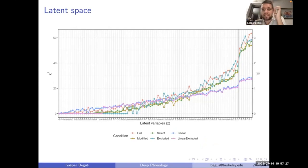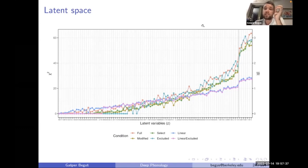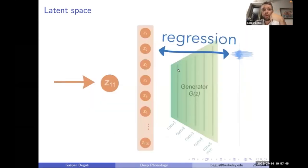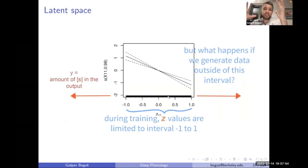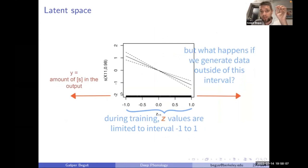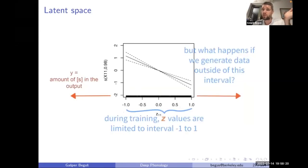The important thing is that the relationship between individual latent variables — for example z11 — and the presence of 's' in the output is linear, although it didn't have to be. The y-axis gives probability of 's' in the output and the x-axis gives the value of z. The estimates seem quite linear not only for z11 but for other variables that correspond strongly to 's' as well.